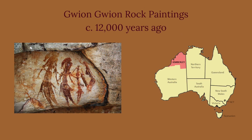The Gwion Gwion Rock Paintings, formerly known as the Bradshaw Rock Paintings, are a collection of prehistoric works of rock art found in the Kimberley region of Western Australia. These works of art consist mainly of anthropomorphic figures dressed in elaborate headdresses and outfits. They date from roughly 12,000 years ago. It's important to note that there are numerous dialects in the area and each has its own name for the rock art — Gwion Gwion is the most common.